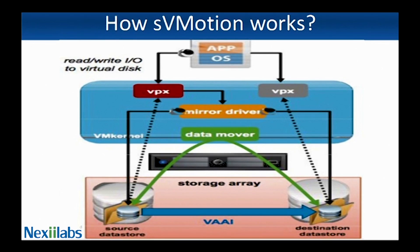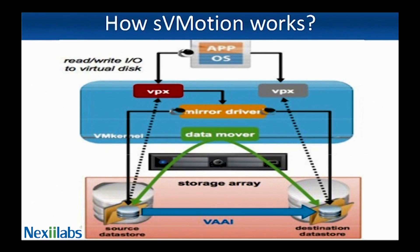A shadow virtual machine is started on the destination datastore using the copied files. Because the shadow VM does not yet have a virtual disk, it sits idle waiting for the copying of the virtual machine disk files to complete. Storage vMotion first creates the destination disk, then a mirror driver is inserted into the data path between the VM and the underlying storage.